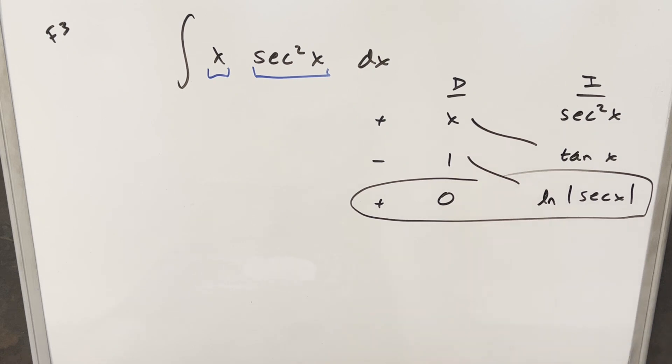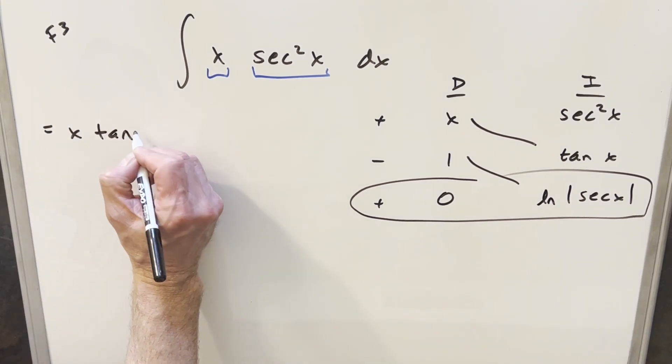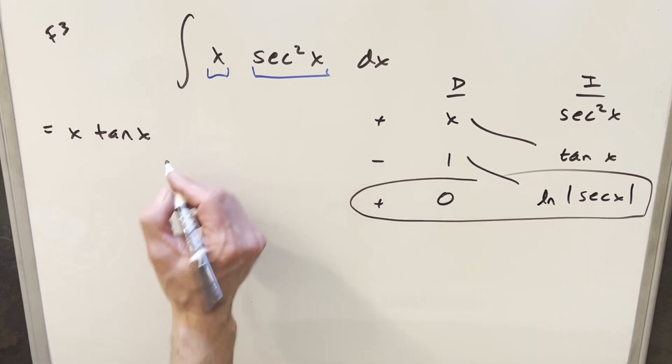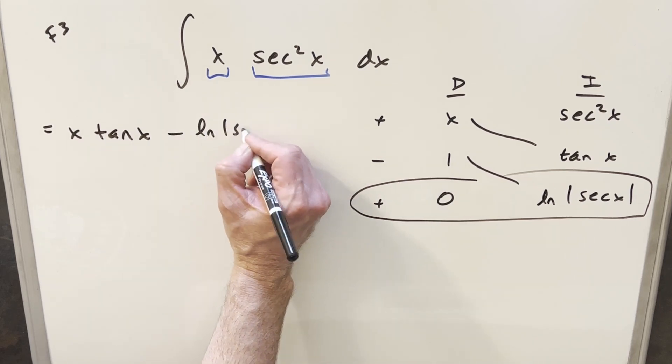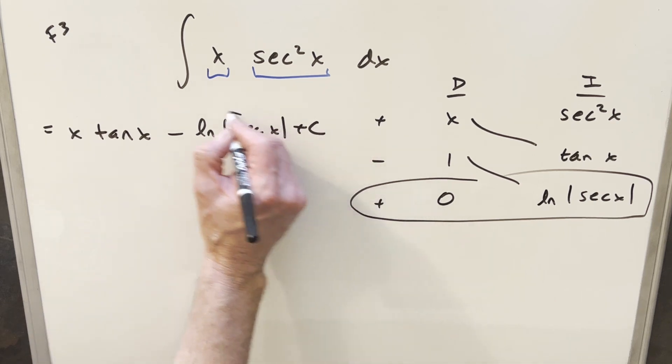So we're just going to have our solution here on the diagonals. So our solution is just going to be x tan x. This is going to be, we need the minus sign, minus natural log absolute value secant x plus c, and that's it.